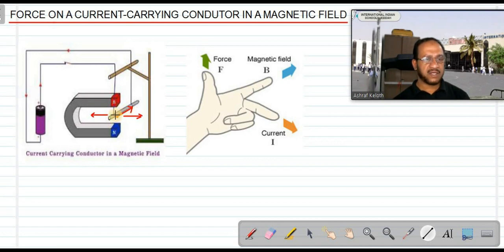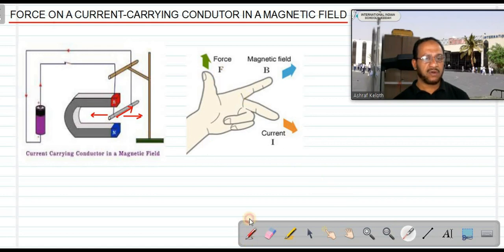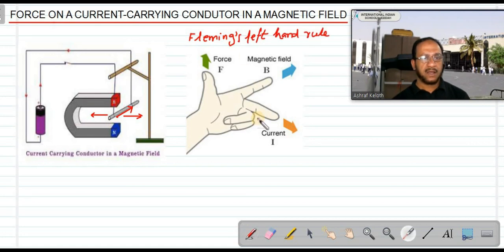The hanging aluminium rod, when current passes through it, will experience a force and be deflected — thrown either out of the magnet or into the magnet. The direction in which the aluminium rod is thrown is given by Fleming's Left Hand Rule. We already have the right hand thumb rule; now it is Fleming's Left Hand Rule, and there is also a Fleming's Right Hand Rule.